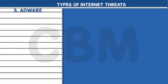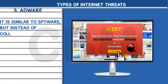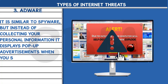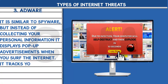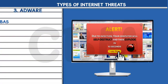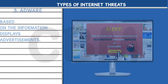3. Adware: It is similar to spyware, but instead of collecting your personal information, it displays pop-up advertisements. When you surf the Internet, it tracks your activity and search history, and based on that information, displays advertisements.